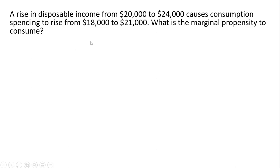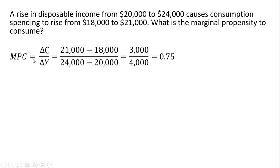Another example: a rise in disposable income from $20,000 to $24,000 causes consumption spending to rise from $18,000 to $21,000. What is the marginal propensity to consume? We use the formula: the change in C over the change in Y. The change in consumption is $3,000, and the change in income is $4,000, giving us a marginal propensity to consume of 0.75.